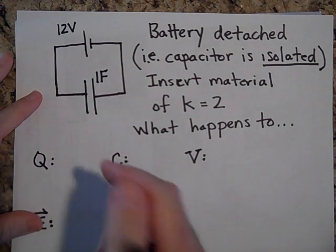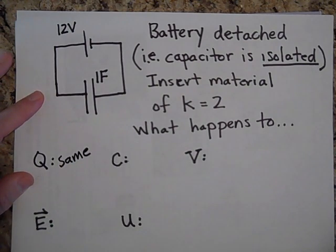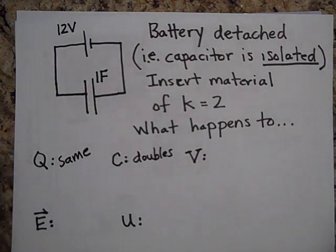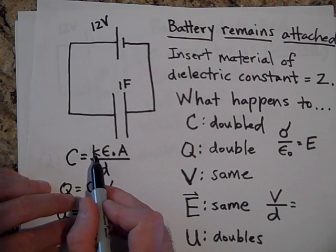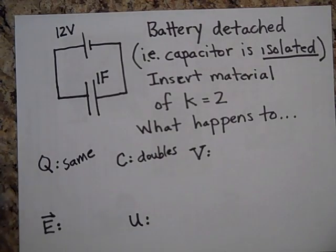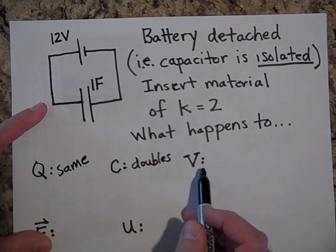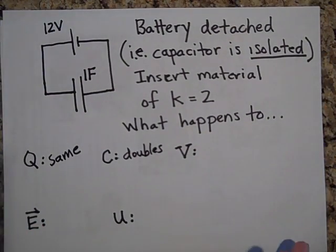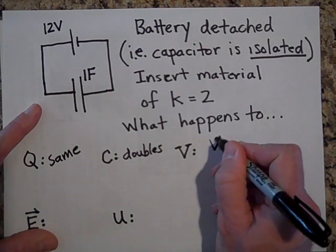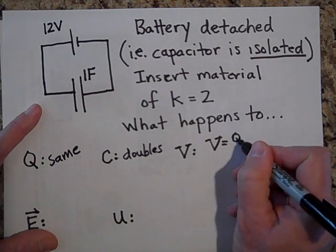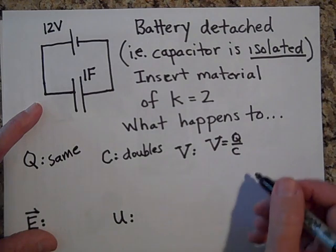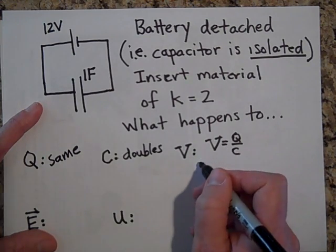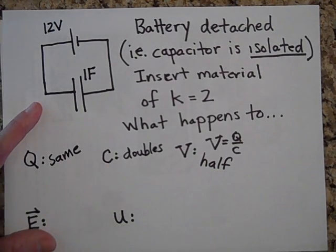If the capacitor is isolated, the charge Q stays the same — it has nowhere to go. But the capacitance doubles because we've put a k of two in there, using C = kε₀A/d. Now the voltage doesn't have to stay the same this time. Using V = Q/C — from rearranging C = Q/V — if Q stays the same and C doubles, then V halves. The voltage will be half of its original value.